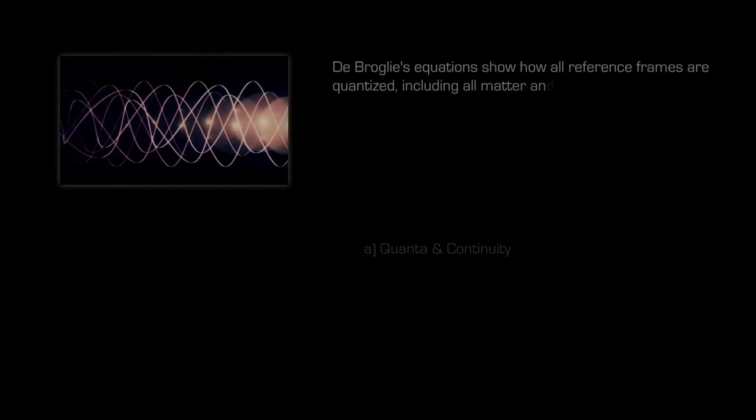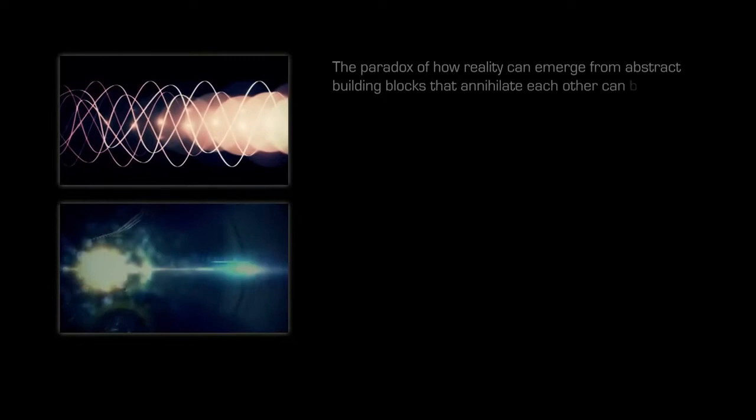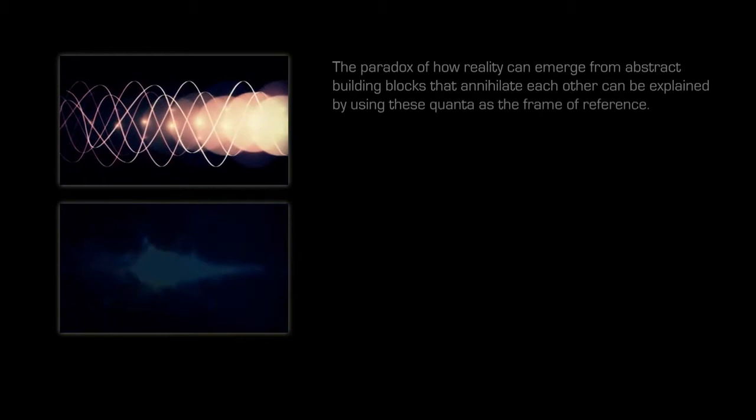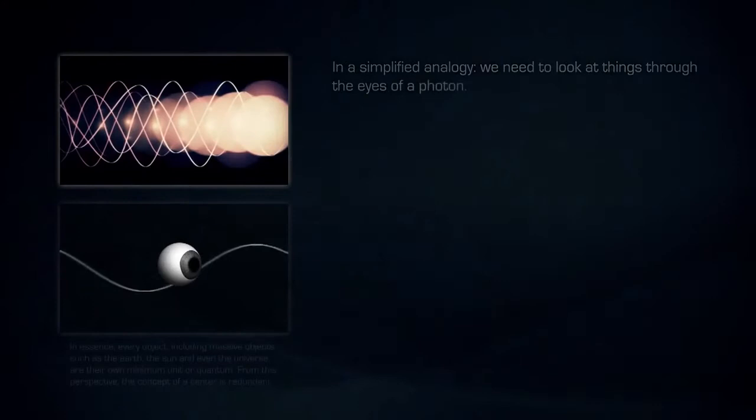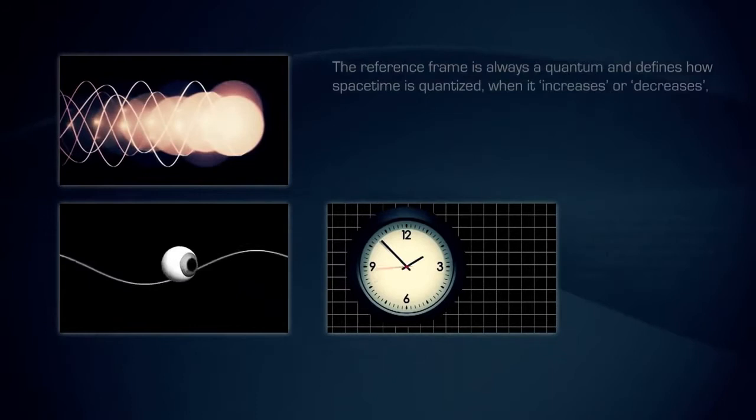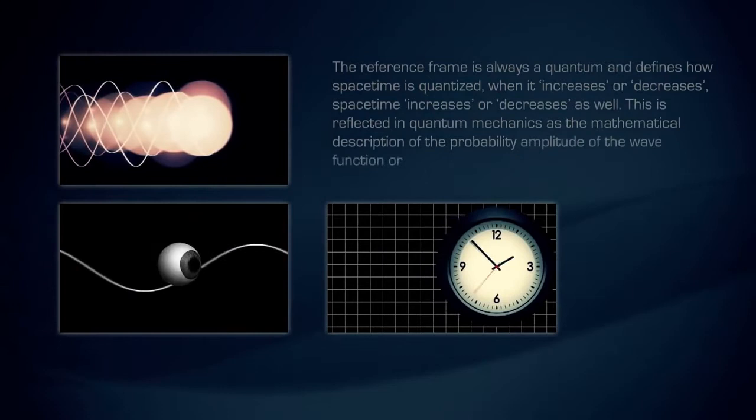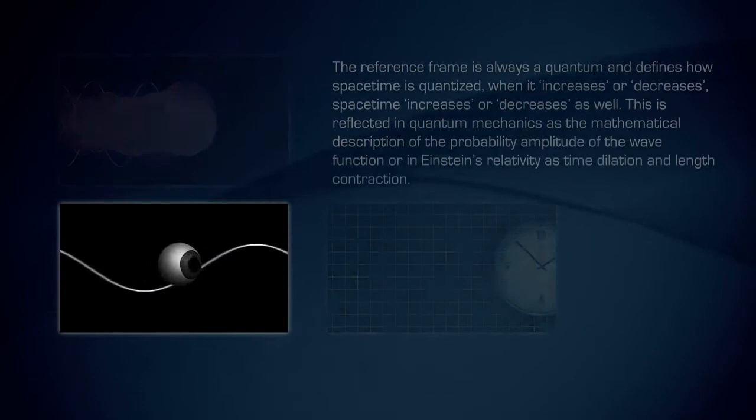De Broglie's equations show how all reference frames are quantized, including all matter and all energy. Particle accelerators have demonstrated that matter and antimatter are always created simultaneously. The paradox of how reality can emerge from abstract building blocks that annihilate each other can be explained by using these quanta as the frame of reference. In a simplified analogy, we need to look at things through the eyes of a photon. The reference frame is always a quantum and defines how spacetime is quantized. When it increases or decreases, spacetime increases or decreases as well. This is reflected in quantum mechanics as the mathematical description of the probability amplitude of the wave function, or in Einstein's relativity as time dilation and length contraction.